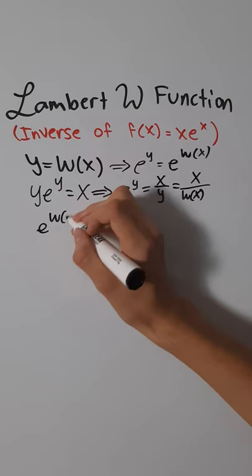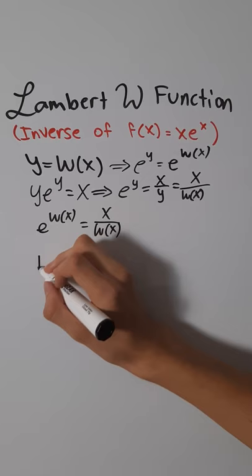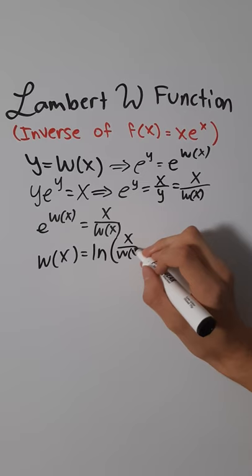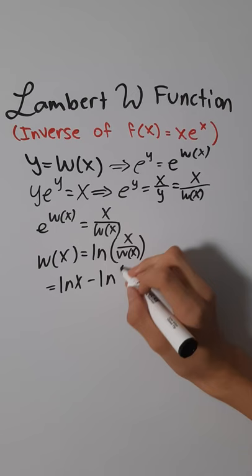If we take the natural log of both sides, we get that w of x equals ln of x over w of x. And ln of x over w of x is simply equal to ln x minus ln of w of x, and so this equals w of x. Isn't that pretty cool?